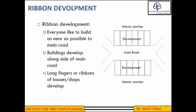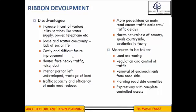Historically, ribbon development started mainly after the industrial revolution and began prevalent along railway lines, predominantly in Russia, the United Kingdom, and the United States of America. Regarding the disadvantages of ribbon development: houses extend in a long strip, there is an increase in the cost of various basic utility services such as water supply, electricity, postal deliveries, and telephone services, which results in the wastage of available resources.